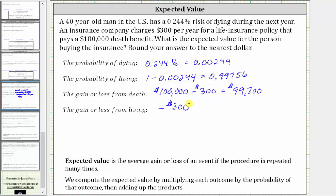And now we have the information we need to calculate the expected value. To determine the expected value we multiply each outcome by the probability of that outcome and then sum the products. So one outcome is the gain of $99,700, and the probability of this occurring is the probability of death, which is 0.00244.